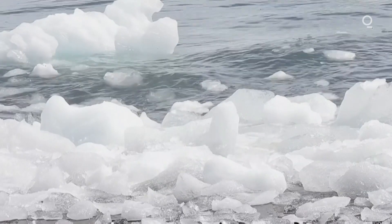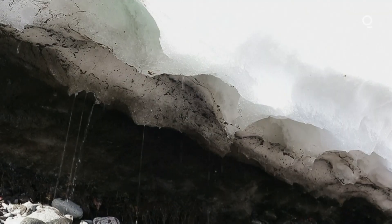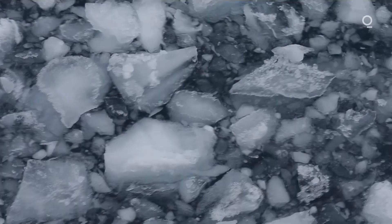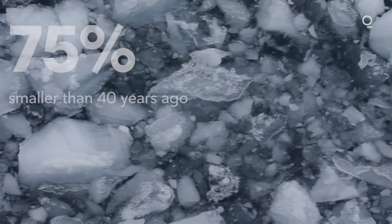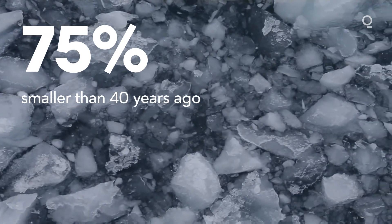The jet stream is a very complicated thing. Many factors can cause it to be wavier. The fact that the Arctic is warming so much faster than anywhere else, about three times faster than the globe as a whole. Sea ice, for example, which is the ice floating on the Arctic Ocean, is now about 75 percent smaller in terms of volume than it was only 40 years ago.